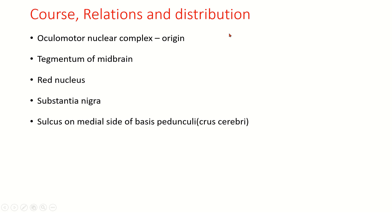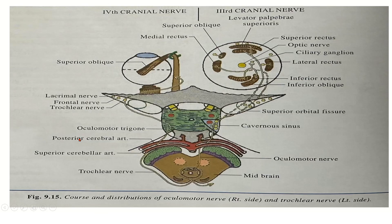Course, relations, and distribution: the origin is from the oculomotor nuclear complex in the midbrain. The fibers pass through the tegmentum of the midbrain, the red nucleus, and the substantia nigra. They then lie on the sulcus on the medial side of the basis pedunculi, otherwise called crus cerebri. You can see here the nerve passing through the tegmentum of the midbrain, close to the red nucleus and substantia nigra, then lying on the medial side of the basis pedunculi.